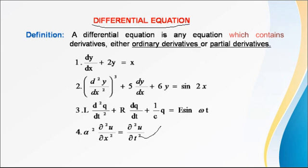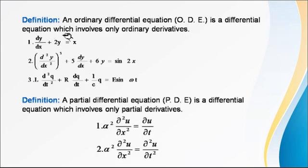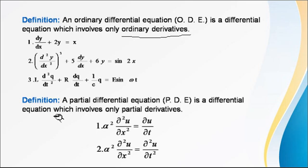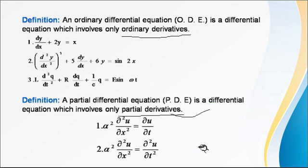An ordinary differential equation involves only ordinary derivatives, where the function depends on only a single independent variable. A partial differential equation involves only partial derivatives, where the function depends on two or more independent variables.